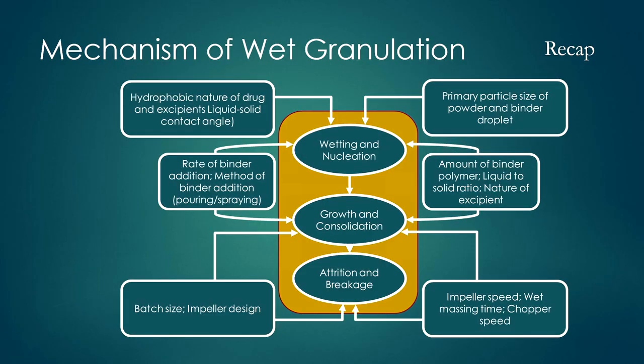The main stages are: wetting and nucleation stage, growth and consolidation stage, and attrition breakage stage. Whenever larger particles form, due to attrition they can break into finer particles, but those particles remain as granules. All these stages — how they are working — were discussed in the previous lecture. So the mechanism of wet granulation should be understood from that lecture.